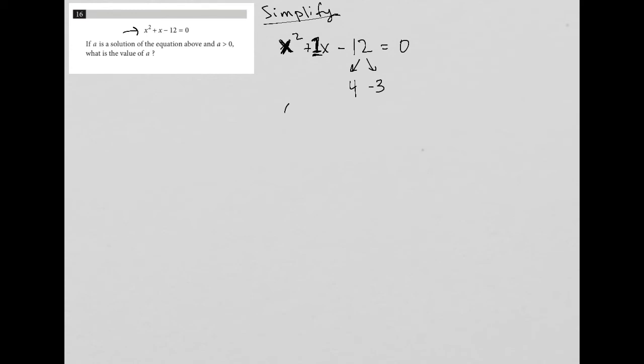So I'd factor this trinomial in that way. So I'd have x plus 4 and x minus 3 is equal to 0. And then to solve for x in both cases, I can just set each binomial equal to 0 separately. And for the first situation, x plus 4 equals 0 means that I'd get x equals negative 4 by subtracting 4 from both sides. And here I'd get x equals positive 3.